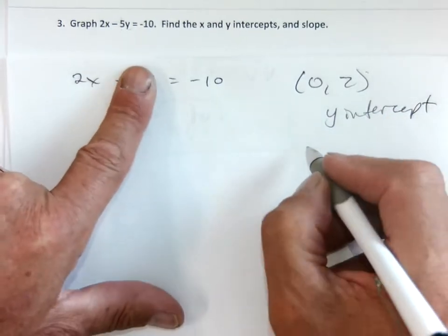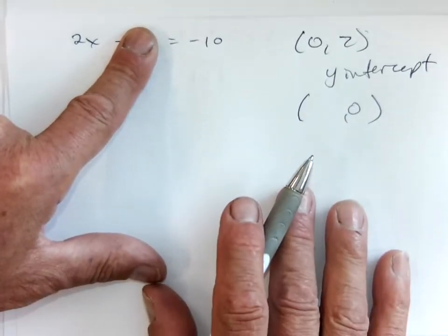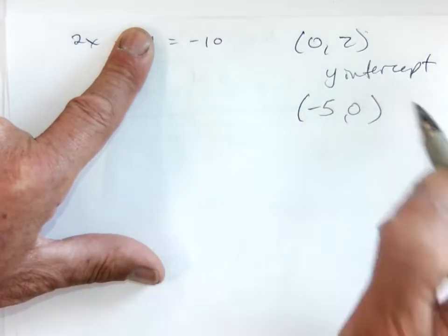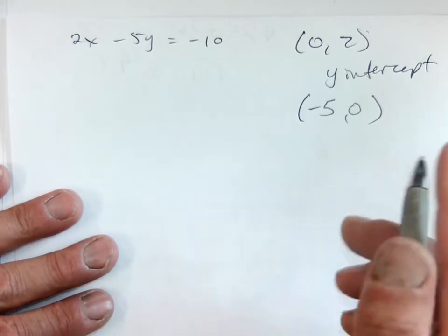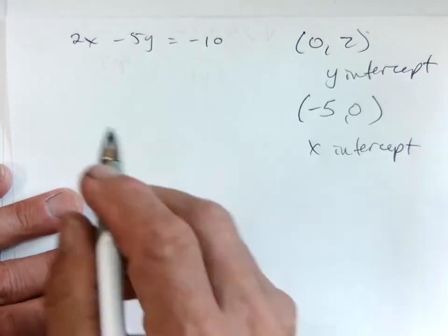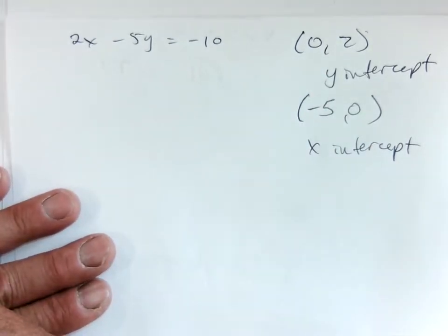That's my y intercept. If I cover up the negative 5, or that y equals 0, right? If I'll let y equal 0, then I'll get negative 5 for my x, right? If I need a slope, we'll just solve for y. How am I doing? Am I going too fast?